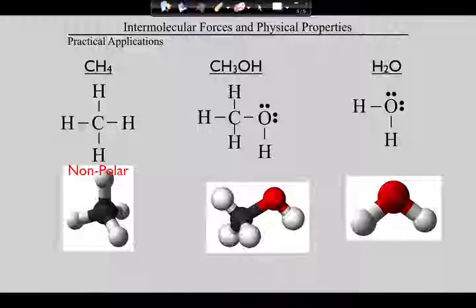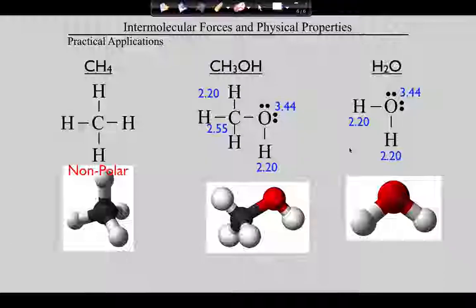Looking at this next molecule — is it polar? Absolutely, because we've got unbonded electrons. Unbonded electrons cause bending, which makes it not symmetrical. Similarly on water, that would also be polar because of the unbonded electrons. Now what we've got to do is figure out which one is more polar. In order to do that, we need the electronegativities and we start doing subtractions.